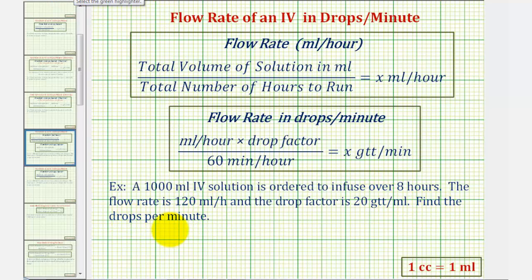To answer this question, we're first going to find the flow rate in mL per hour, given here by this quotient. Then once we find this flow rate, we can find the drops per minute by performing the substitution here to finally determine the drops per minute.